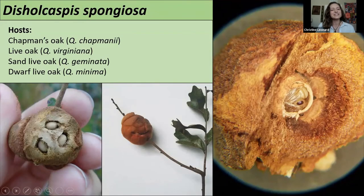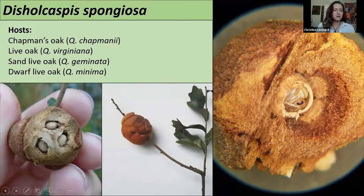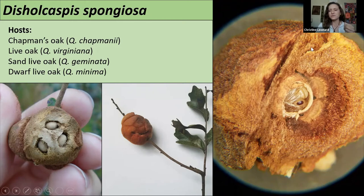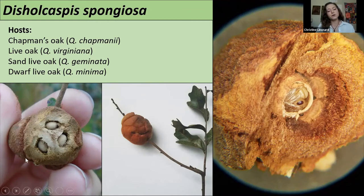Dichelcaspis spongiosa is a really cool gall I very rarely see, but I included it because it is so cool. These galls can get over three inches around. They're quite soft, quite spongy — surprisingly spongy — and very light and corky. They give you a really great insight into gall anatomy, letting you see the different types of tissue in a gall. They can have multiple kernels per gall, which is a trait of some species — so always keep that in mind. If you see a gall, it might have more than one wasp in it.